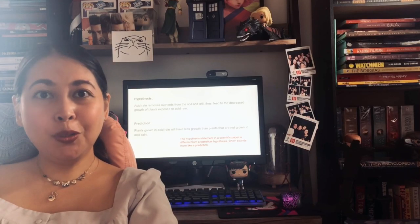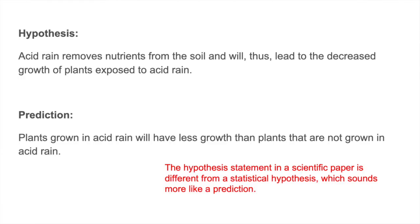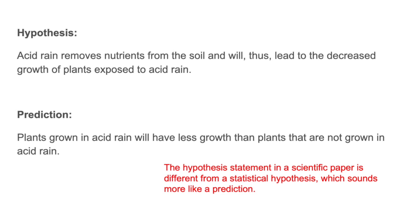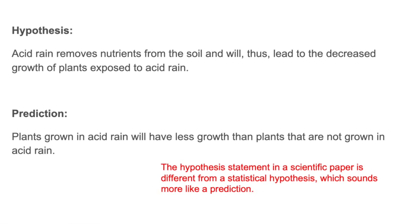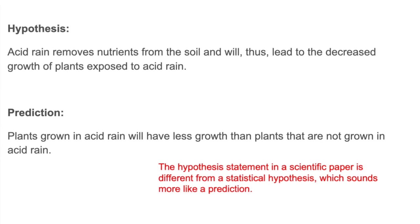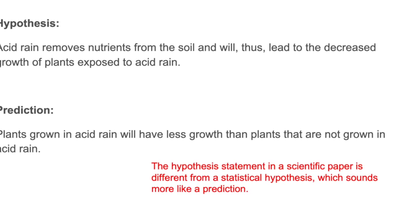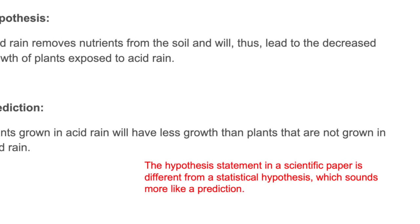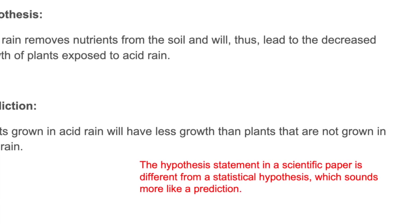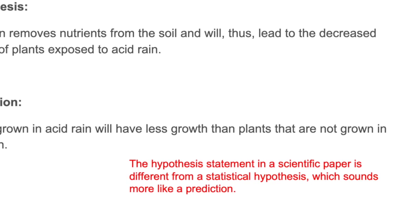I will now show you the difference between a hypothesis and a prediction. As you can see from the statements on the screen, a hypothesis gives us an explanation of why a certain event will occur, whereas a prediction tells us what we expect will happen. A scientific proposal and a scientific paper should have a hypothesis and not a prediction.